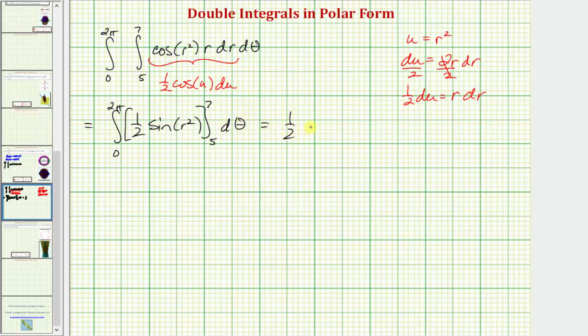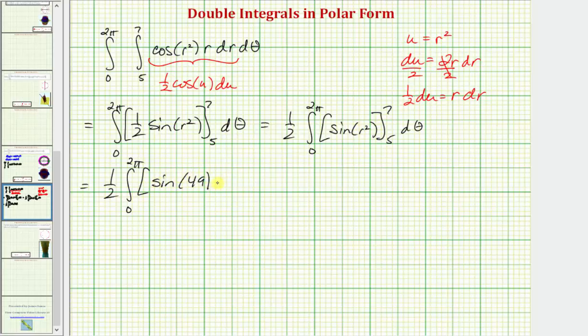Let's go ahead and write this as one half times the integral from zero to two pi, and now we'll evaluate sine r squared at seven, then five, and then find the difference. So we'd have one half times the integral from zero to two pi of, when r is equal to seven, we have sine of 49, minus when r is five, we have sine 25.